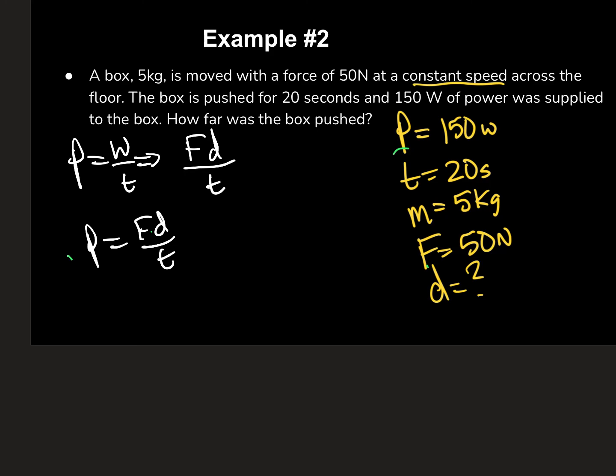So I can use this equation. So all I've got to do is rearrange for distance. So it's going to be power times time divided by force. So that is going to be 150 times the time of 20 seconds divided by a force of 50 newtons. So what does that give me? That's 3,000